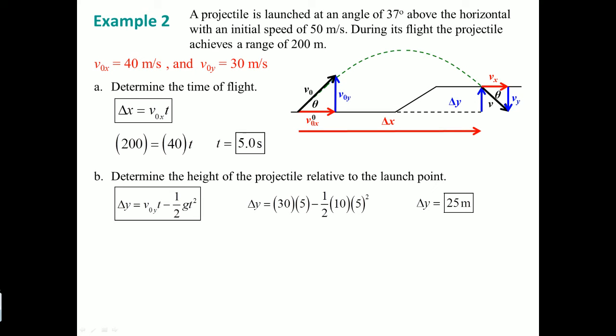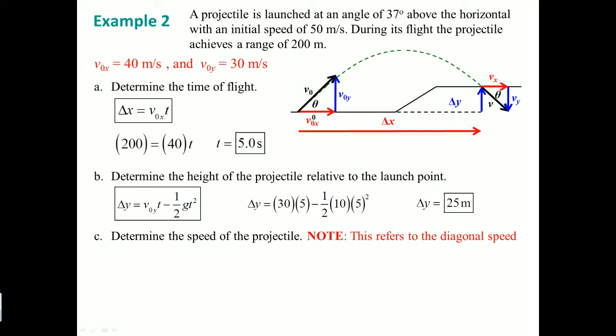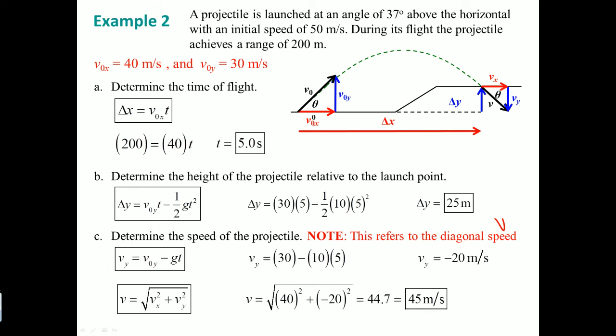Using the quadratic kinematic equation, we get 25 meters for the height. Next, finding the speed of the object requires using trigonometry — combining the horizontal velocity and vertical velocity components as sides of a right triangle to solve for the resultant speed magnitude.